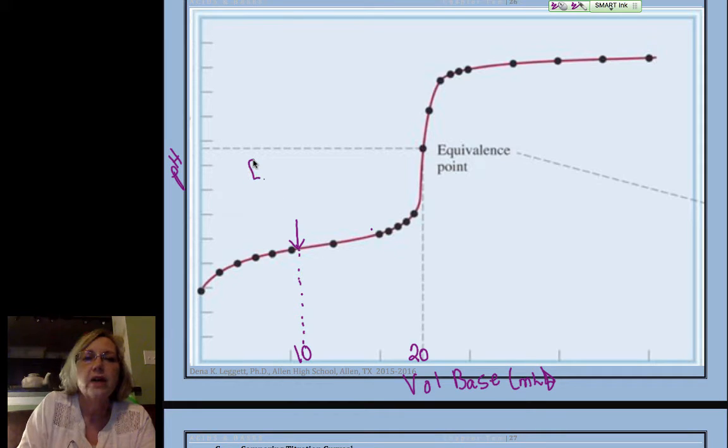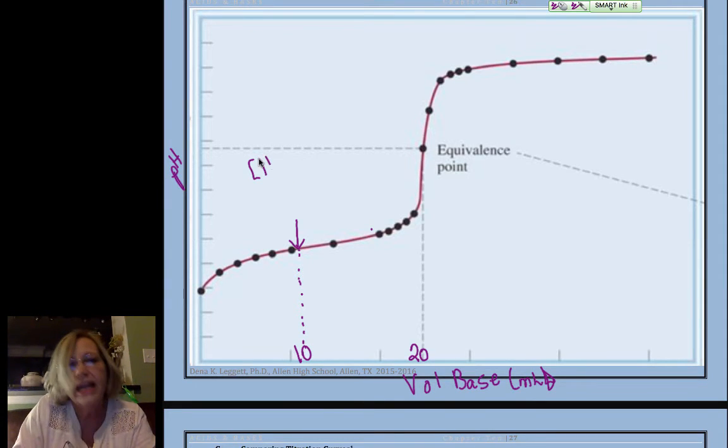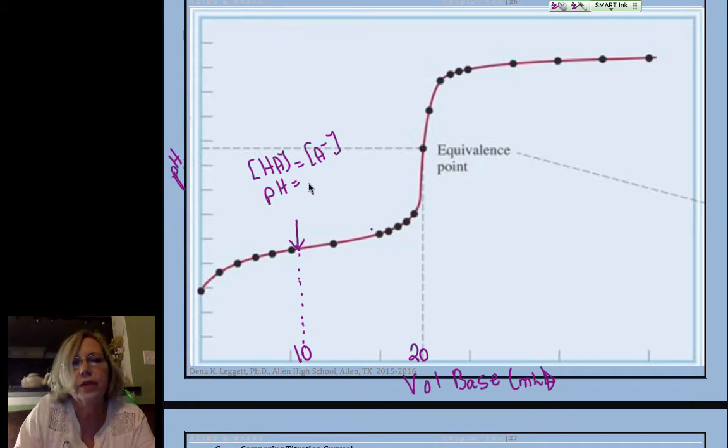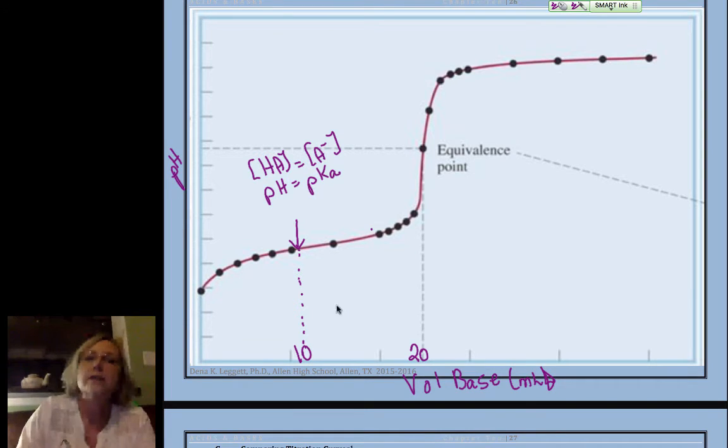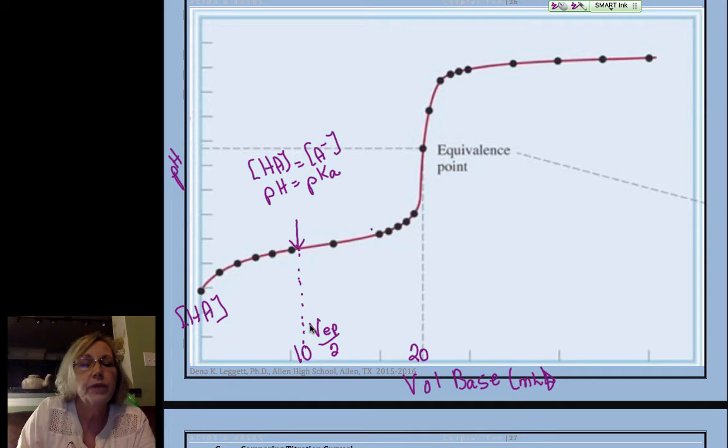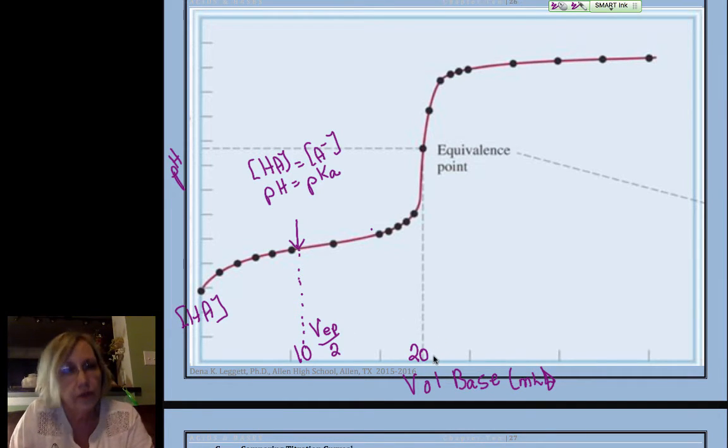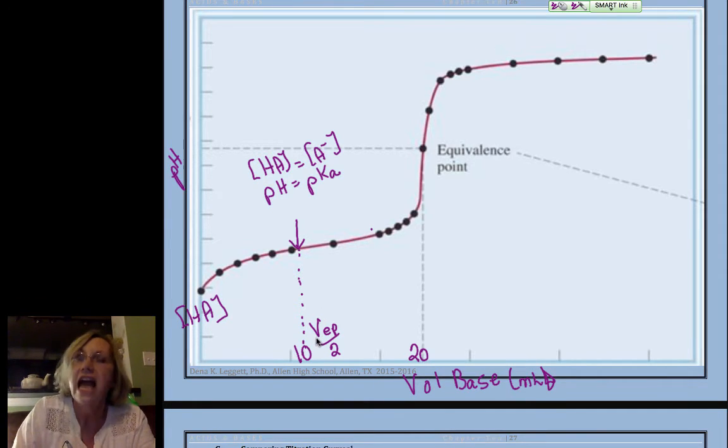Because at that point, my concentration of acid, I'm just going to call it HA and A minus, just for simplified notation, so my acid at that point was equal to my conjugate, and my pH was equal to my pKa. So that's really important to see. At the beginning, all I had was my acid.